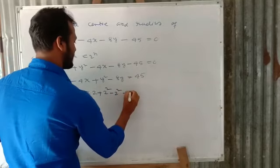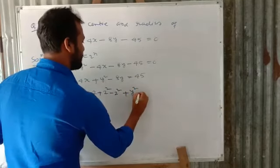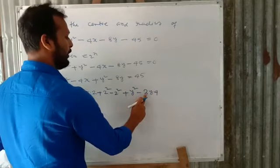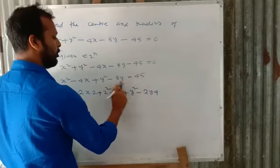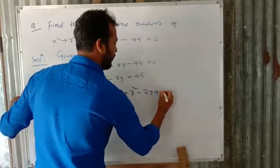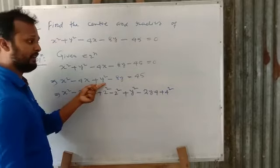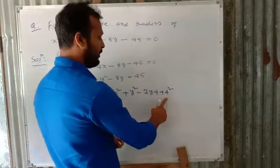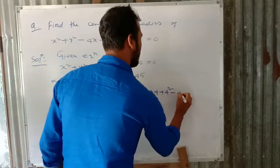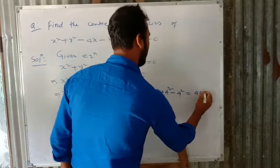Plus y² − 2×y×4. Since 2×4 = 8y, we add 4² to complete the square. Since 16 is not already present, we write +4² and then −4², all equal to 45.